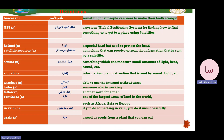Now let's review some definitions. Braces are something people can wear to make their teeth straight or support their teeth. GPS — all of us have heard about it — is an abbreviation for Global Positioning System. It's a system for finding how to get to a place using satellites, used in our cars or mobile phones. A helmet is a special hard hat used to protect the head. A satellite receiver is a machine that can receive or read information sent by satellite.